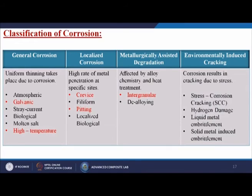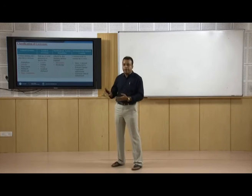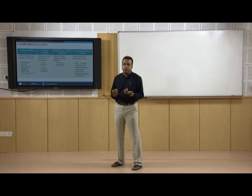Next is localized corrosion — a high rate of metal penetration at specific sites — including crevice, filiform, pitting, localized biological, metallurgically assisted degradations, intergranular, and dealloying. And last is environmentally induced cracking — corrosion resulting in cracking due to stress: stress corrosion cracking, hydrogen damage, liquid metal embrittlement, and solid metal induced embrittlement. These are all different types of corrosions we see or face in day-to-day life.